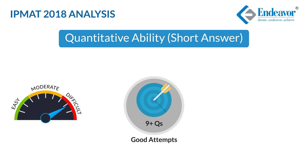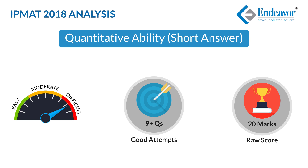Though there was no negative marking, achieving even 80% accuracy would be slightly difficult, and hence 5 plus net correct or a raw score of 20 plus can be considered good for this section.